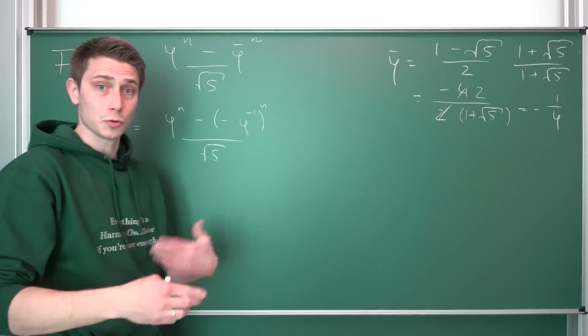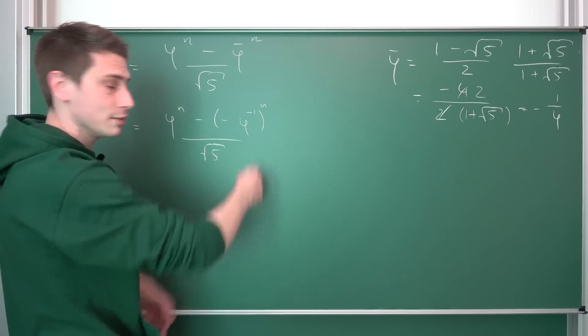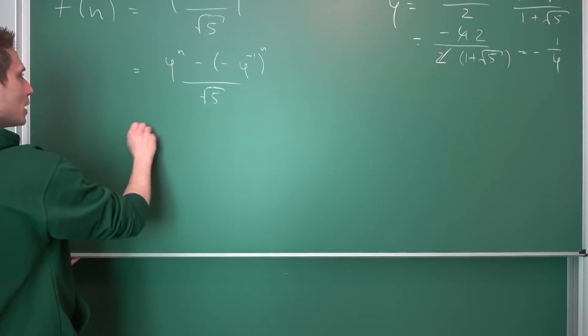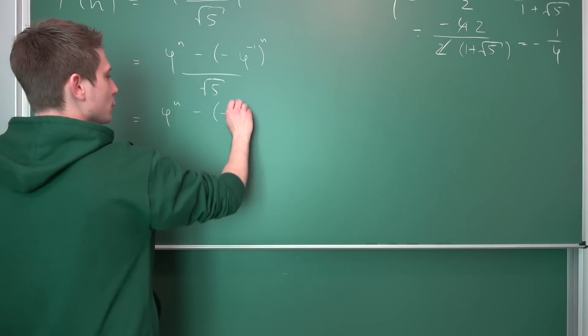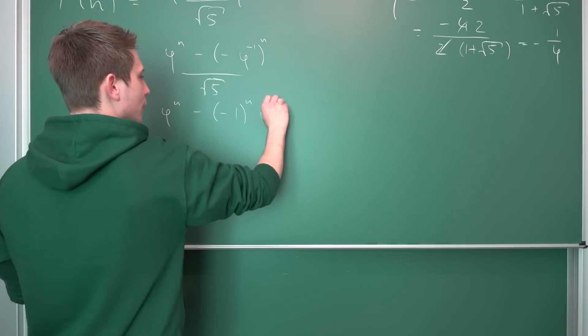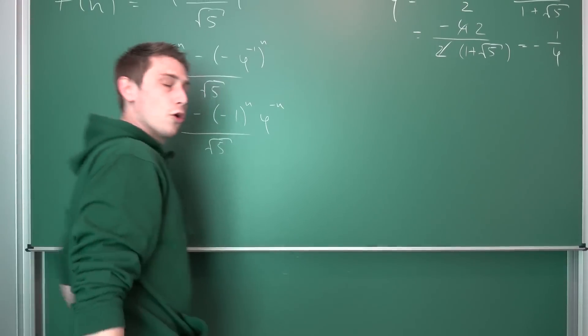You know, by the rules of powers, we can split this up. So this is negative 1 to the nth power and then phi to the negative nth power. Meaning overall, we are going to end up with, for now, phi to the nth power minus negative 1 to the nth power, phi to the negative nth power over the square root of 5. That's a mouthful.